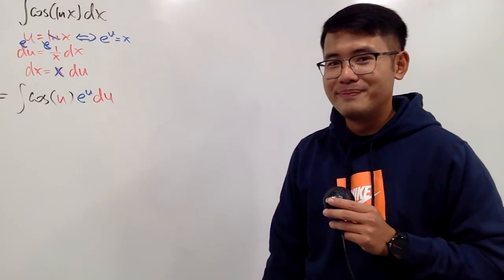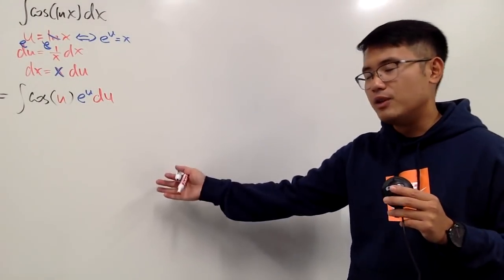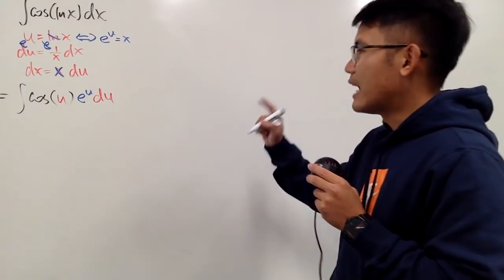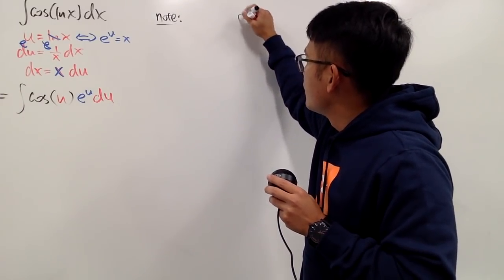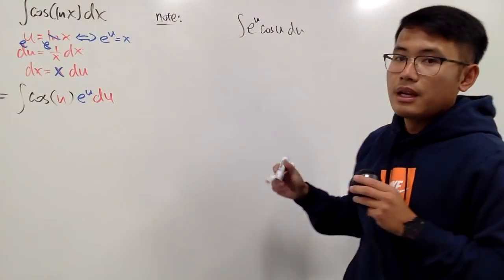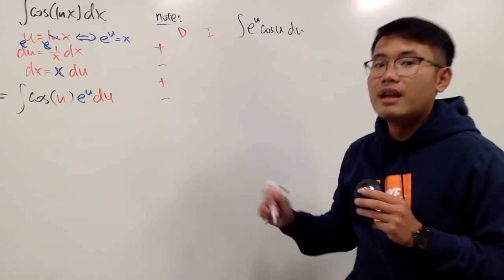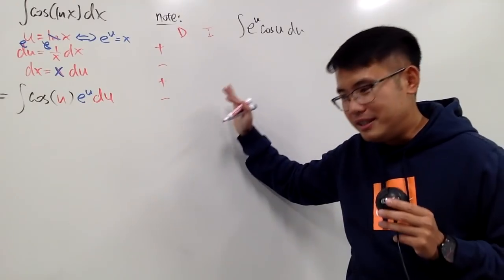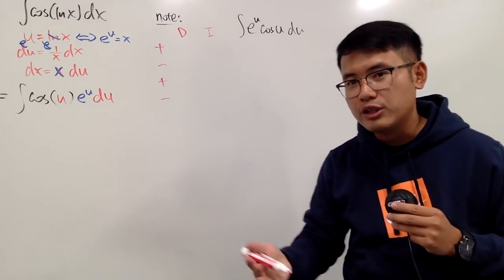To continue from here, we need to use integration by parts, and I will show you the DI format. Hopefully you've seen my other videos on this; you can check out the links in the description. The DI format is not magic — it's just integration by parts, a much easier way to format it. The D column is like the u, and the I column is like the dv in the traditional u dv format.